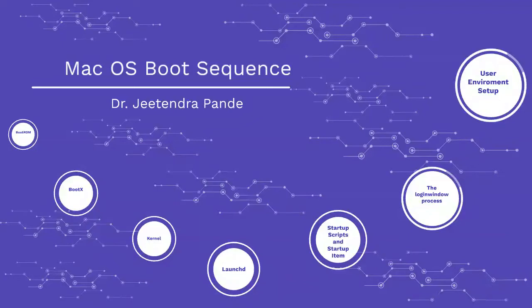Open firmware initializes the random access memory, memory management unit, and hardware necessary for the ROM's operation. The open firmware then checks settings stored in NVRAM and builds a list of all devices on the device tree by gathering their stored F-code information.